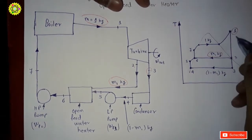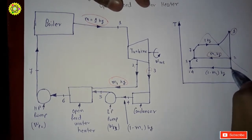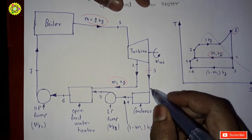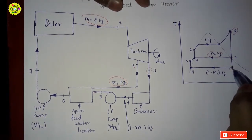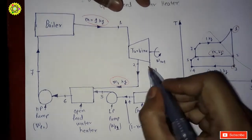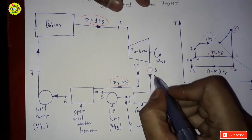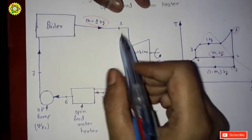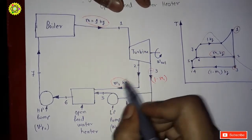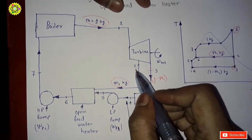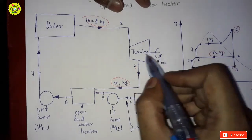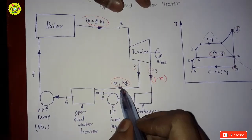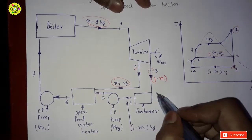The remaining steam goes further to State 3, where it is fully expanded in the turbine down to the condenser pressure. This remaining steam at State 3 has a mass of (1 − m1) kg. So the complete 1 kg of steam enters at State 1, m1 kg is extracted at State 2, and the remaining (1 − m1) kg proceeds to State 3 and on to the condenser.